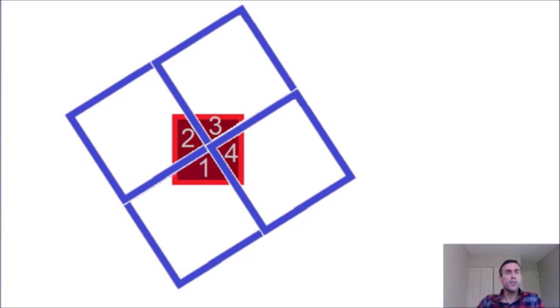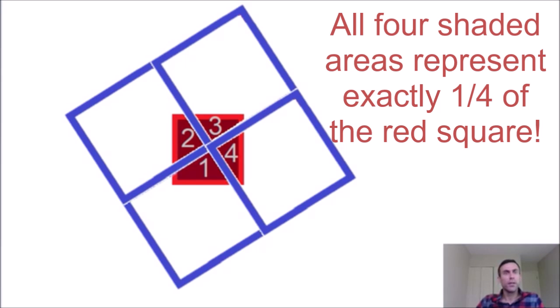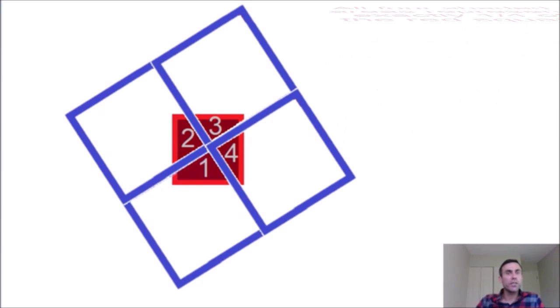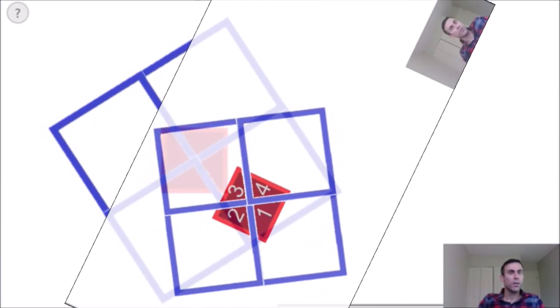Alright, and the cool thing is that these 4 areas in dark red are exactly the same shape and exactly the same area. They each represent exactly 1 quarter of the red square. And this will be really clear to see if we rotate the blue squares around the center of the red square. So that's what I'm going to do right now.